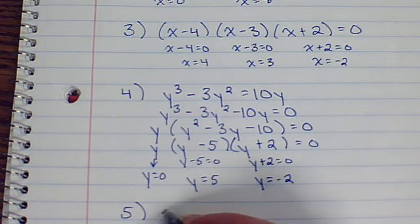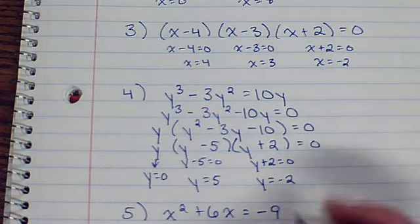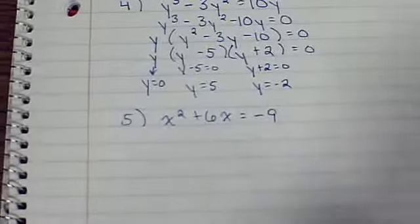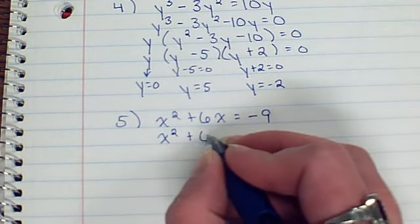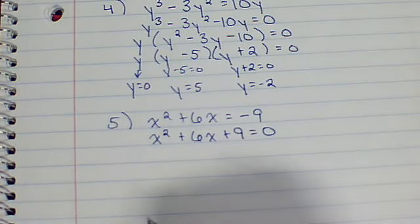Next, x squared plus 6x equals negative 9. Isolate 0. Let's get everything else on one side and 0 by itself. And we're going to factor.